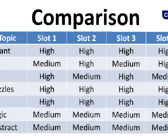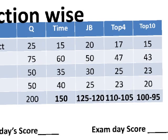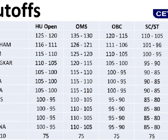Moving to the section-wise break-up for JBIMS: Abstract 20-plus, Logic 50-plus, Verbal 30-plus, and Quant 25-plus would have been a very good score to touch JBIMS. That's the average score — 120 to 125. For the top 4 colleges, it will be between 110 to 105, and for the top 10 colleges it will be around 95. This is the final expected cutoff from my side, comparing all the analysis — JBIMS cutoff will be between 120 to 125.